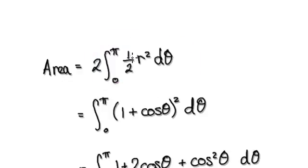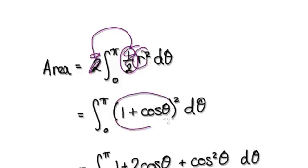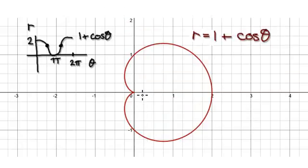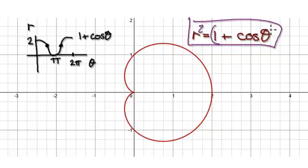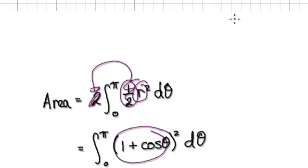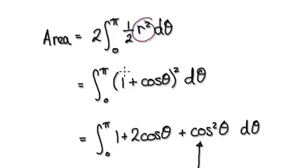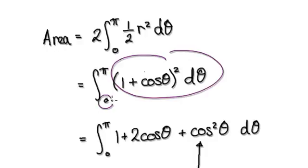This is a constant, so take it out — the two will cancel each other out. Don't forget, r squared is this. If you look at the original equation, r is given by this, so r squared is this. Put this into here, and that will take you to the expression to integrate from 0 to pi.